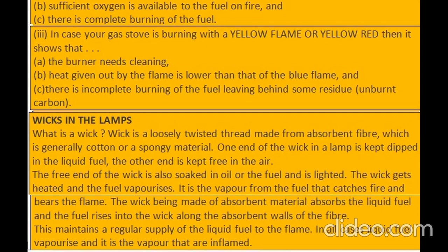Wicks in lamps: a wick is a loosely twisted thread made from absorbent fiber — generally cotton or a spongy material. One end of the wick in a lamp is kept dipped in the liquid fuel; the other end is kept free in the air and is lighted. The wick gets heated and the fuel vaporizes. It is the vapor from the fuel that catches fire and bears the flame. The wick, being made of absorbent material, absorbs the liquid fuel which rises along the absorbent walls of the fiber, maintaining a regular supply of liquid fuel to the flame. In all cases, liquid fuel vaporizes and it is the vapors that are inflamed.